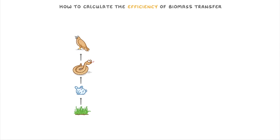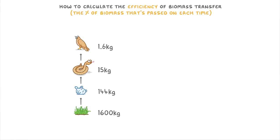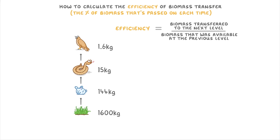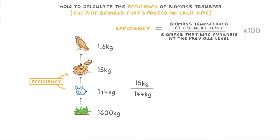The last thing we need to cover is how to calculate the efficiency of biomass transfer, which is basically the percentage of biomass passed on each time. The equation is: efficiency equals the biomass transferred to the next level divided by the biomass available at the previous level, multiplied by 100 to turn it into a percentage. So to find the efficiency between snakes and rabbits, we do 15 kg divided by 144 kg, times 100, giving an efficiency of 10.4% — meaning 10.4% of the rabbit biomass got passed on to the snakes.